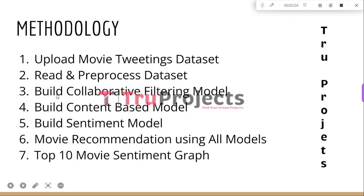The third module is Build Collaborative Filtering Model. In this module, we build a Collaborative Filtering Model using a technique that recommends items to users based on their similarity to other users or items. The model analyses the historical ratings given by users to different movies and identifies patterns among similar users or movies.